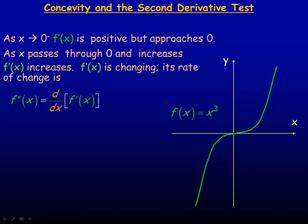In this video we'll take a look at concavity and what's called the second derivative test. In this particular graph, as x approaches 0 from the left, as we're coming in this direction, the derivative is positive. Drawing a few tangents along the curve, starting around here and going towards the origin, notice that all those tangents are positive. Right at the origin, the tangent line becomes horizontal just at a point, and then it starts to increase again.